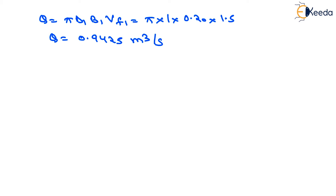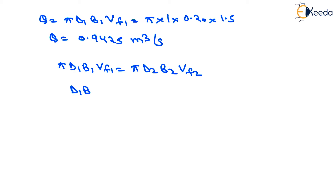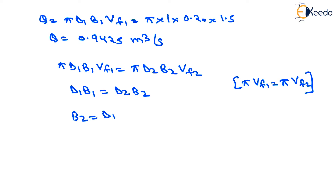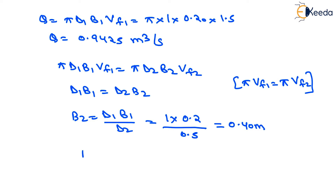From the continuity equation for reaction turbines: π·D1·B1·Vf1 equals π·D2·B2·Vf2. Since Vf1 equals Vf2, this simplifies to D1·B1 equals D2·B2. Rearranging, B2 equals D1·B1 divided by D2. Substituting D1 equals 1, B1 equals 0.2, and D2 equals 0.5, we get B2 equals 0.40 meter, which equals 400 mm.